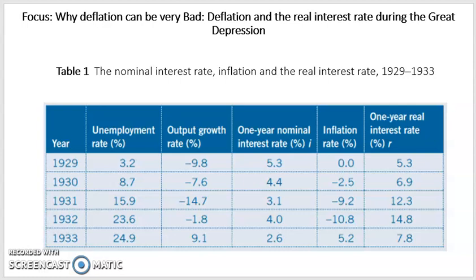We are going to use data from the United States economy during the Great Depression to look at the evolution of nominal and real interest rates and the dangers of deflation. After the collapse of the share market in 1929, the US economy fell into an economic depression. The unemployment rate increased from 3.2% in 1929 to 24.9% by 1933, as shown in the first two columns of Table 1.